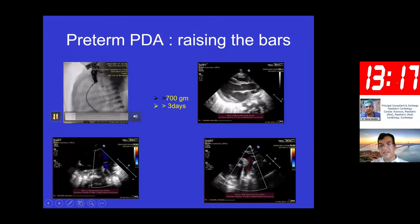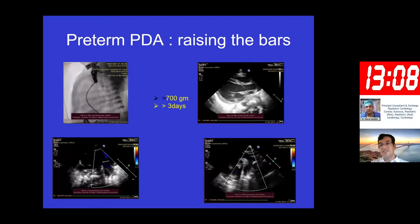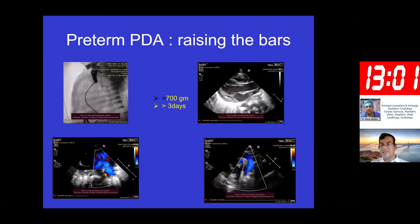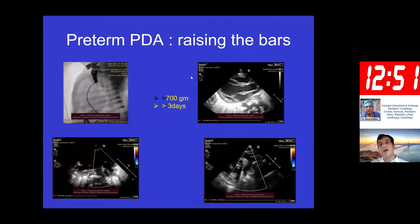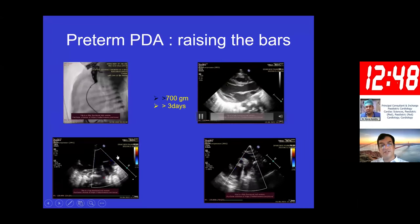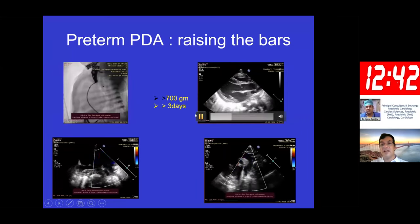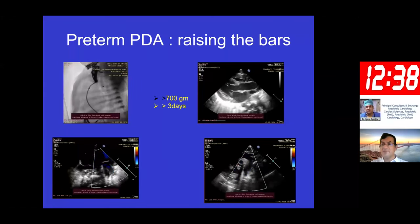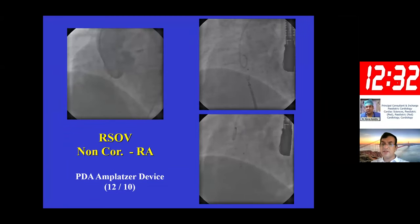Very recently, we were among the first to perform piccolo preterm PDA device closures, which can be done in babies as small as 700 grams who are stuck on ventilators. Classically these were closed by surgical techniques. The piccolo device — the first one closed in this part of the world — showed wonderful normal laminar flow in the left pulmonary artery, normal flow in the descending aorta, with the child doing wonderfully well after almost two months. Subsequently we have deployed it in many other preterm babies with equally good results.